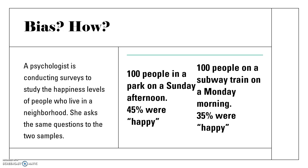A psychologist surveys the happiness level of people in a neighborhood. She asks the same questions to two different samples: 100 people in a park on a Sunday afternoon, of whom 45% said they were happy, and 100 people on a subway train on a Monday morning, of whom 35% said they were happy. This is a biased sample because people relaxing in a park on a weekend are likely to be happier than people commuting to work on a Monday morning.